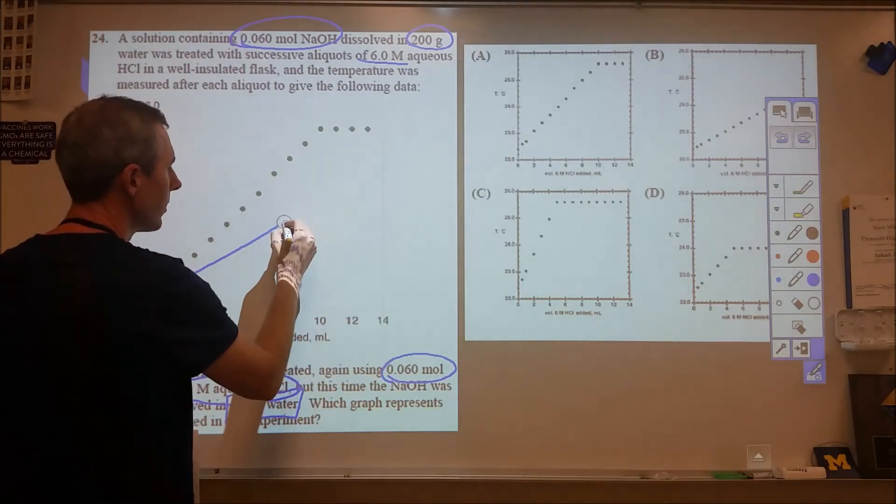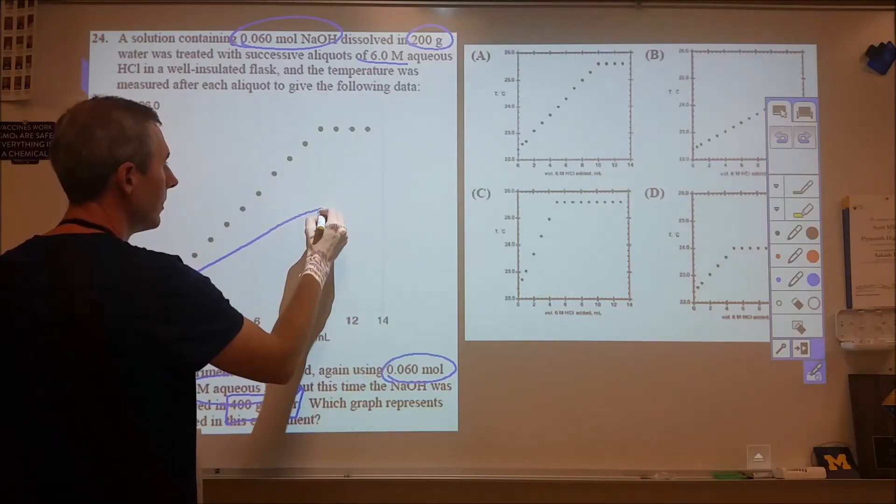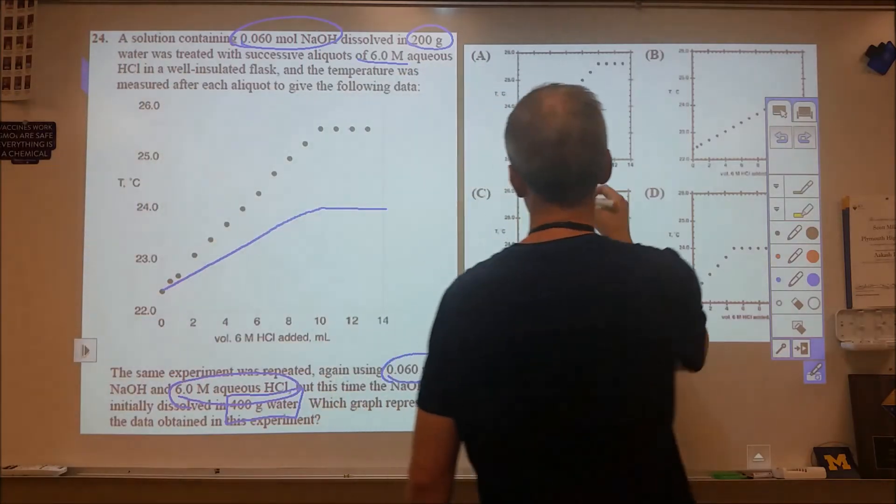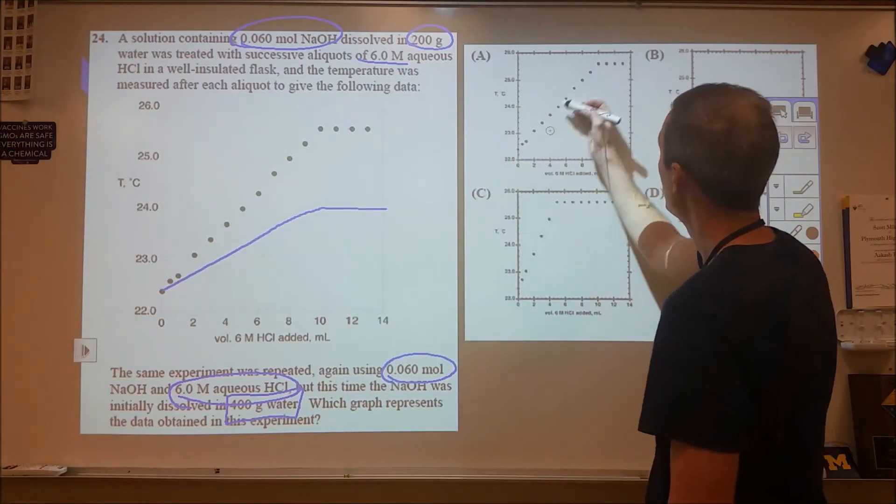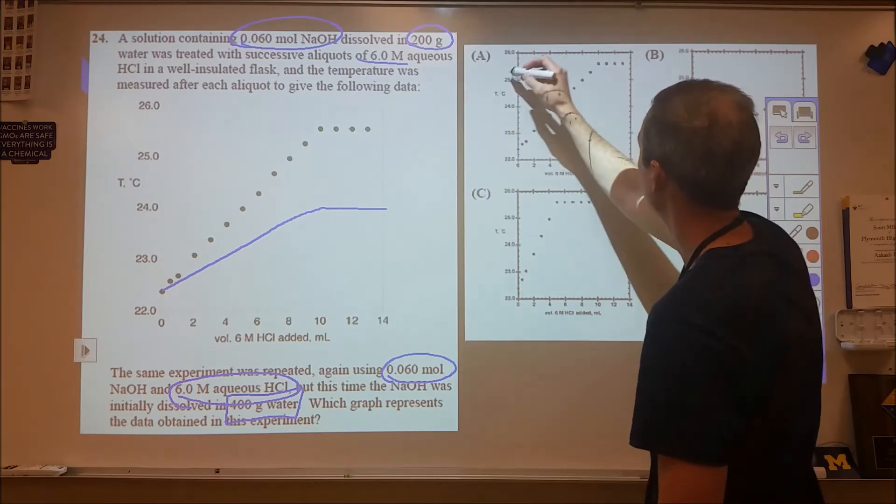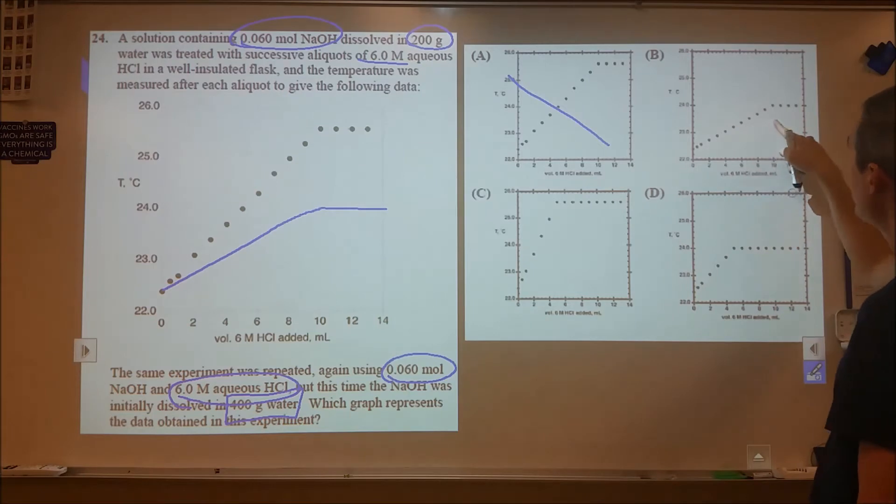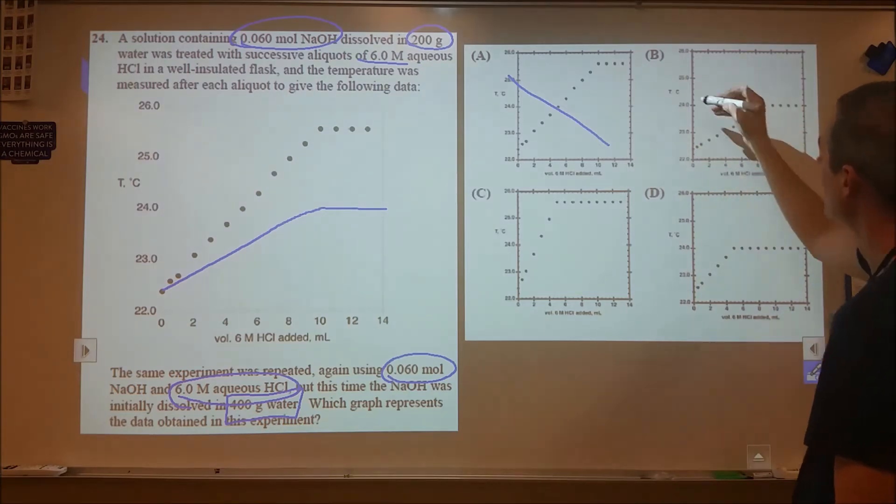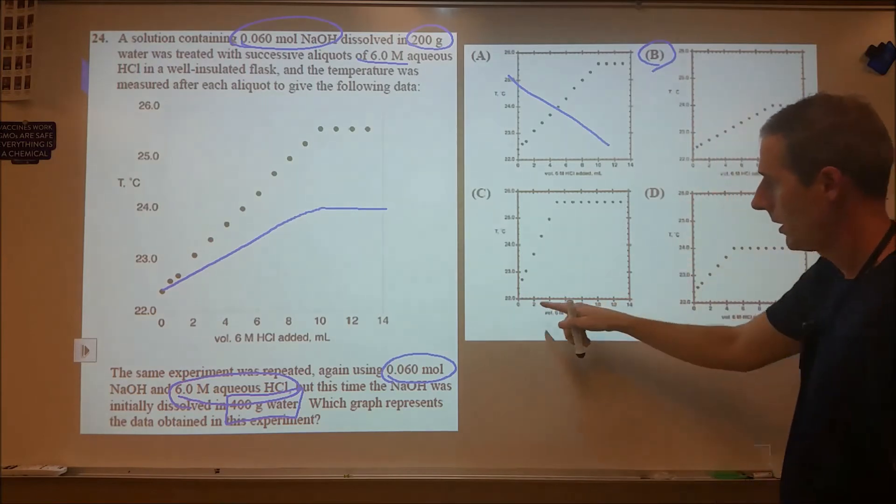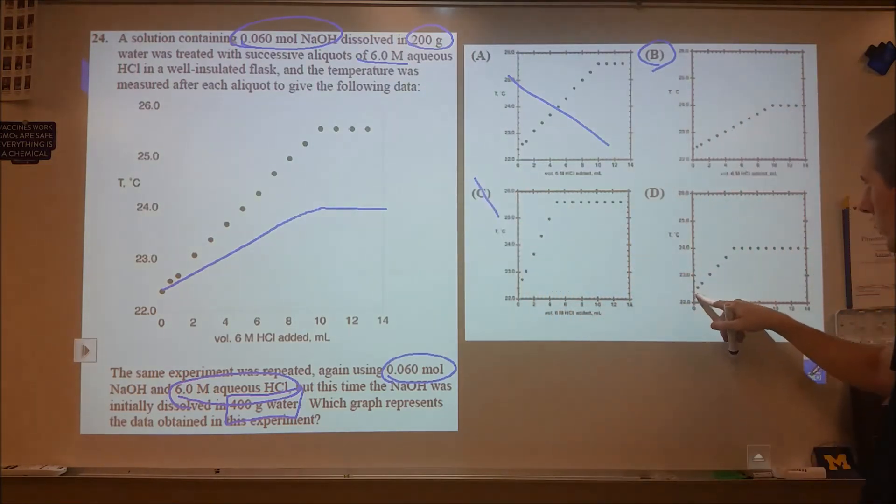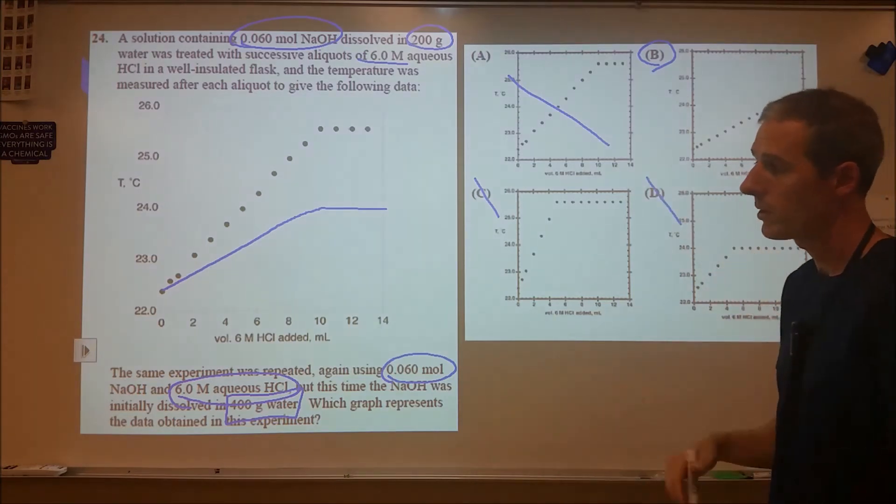If we come and check our graphs, we should still start at the same point. We should end though somewhere around 24. So A is incorrect. If we look at B here, we start between 22 and 23, end at about 24, at 10 milliliters. So that's our choice. And then here we go 22 to about 25. That's incorrect. And 22 to 24, but now it's at 5 milliliters. So that's incorrect. So B is our best choice there.